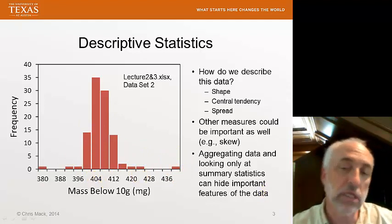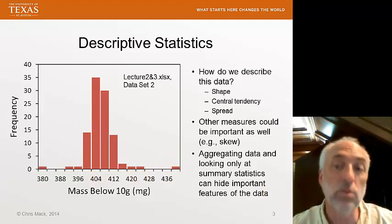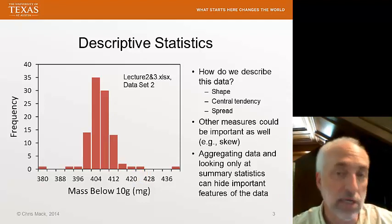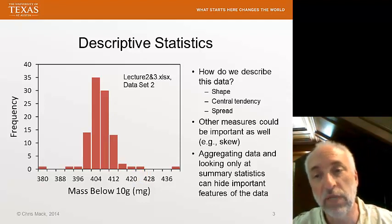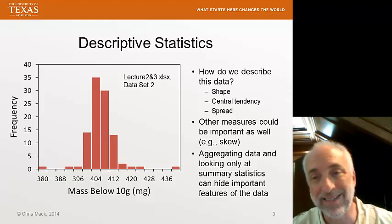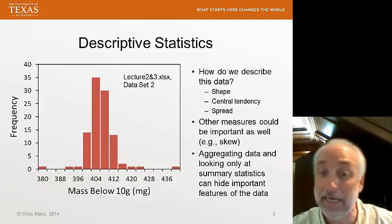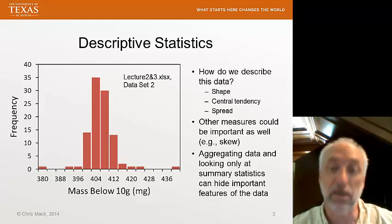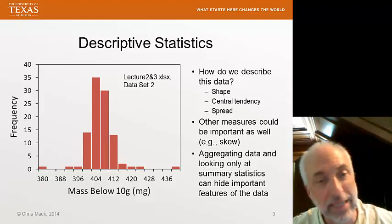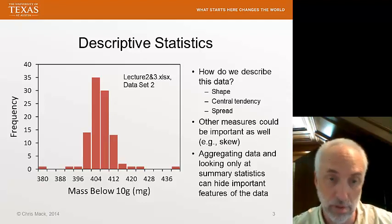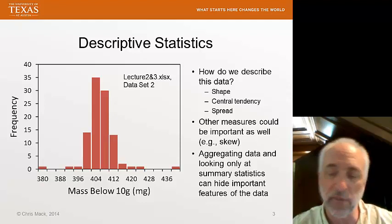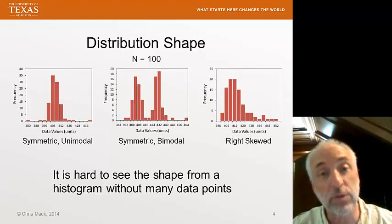If we don't plot the data and only look at mean and standard deviation, for example, we can also miss out. So it is almost always very valuable to plot the data as a histogram, as long as you have enough data points to make that worthwhile. And so the first thing you want to look for is the distribution shape.